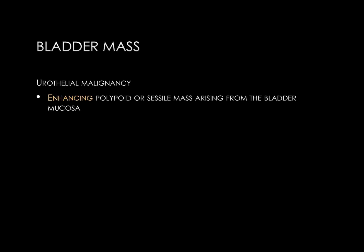Imaging features of urothelial malignancy: a urothelial cancer is an enhancing mass arising from the mucosal layer of the bladder or urinary tract. The mass may be polypoid or ball-shaped, or it may be sessile or flat. We do need pre- and post-contrast imaging to prove the enhancement, and this is included in both the CT and MR urogram protocols.